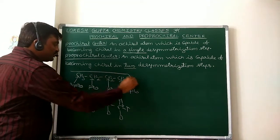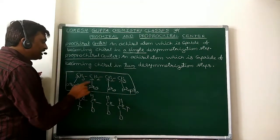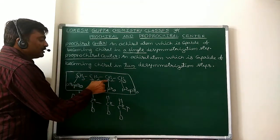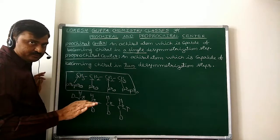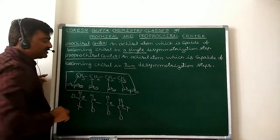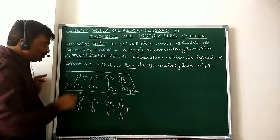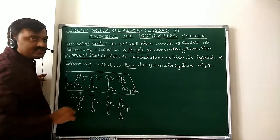So in normal butane: the number of Chiral centers is zero, the number of Pro Chiral centers is two, and the number of Pro Pro Chiral centers is two.